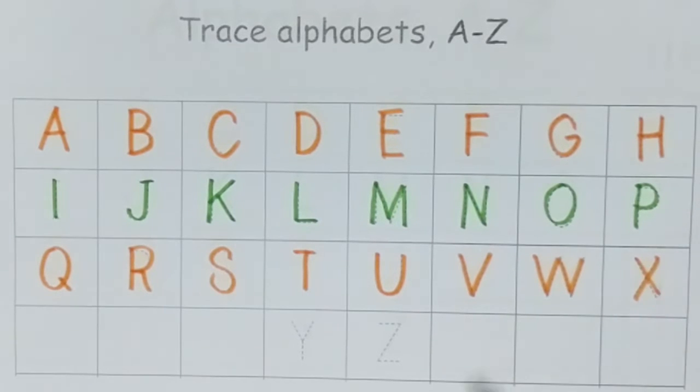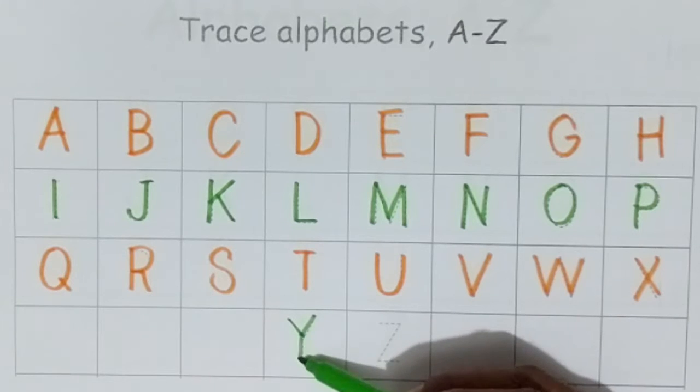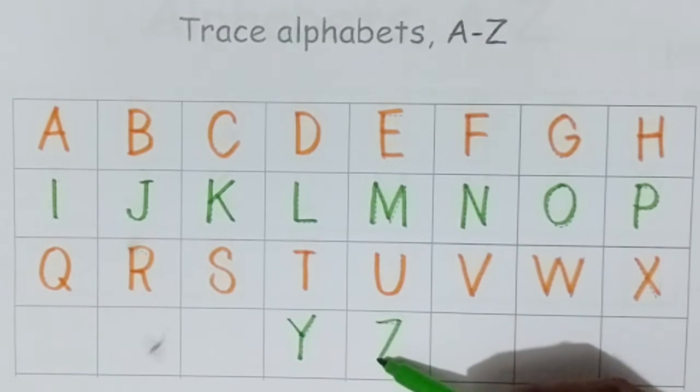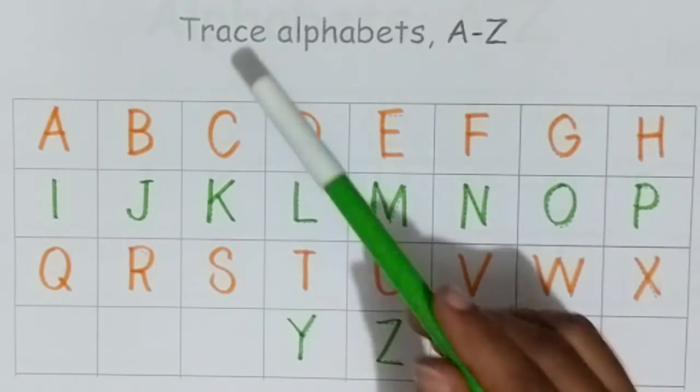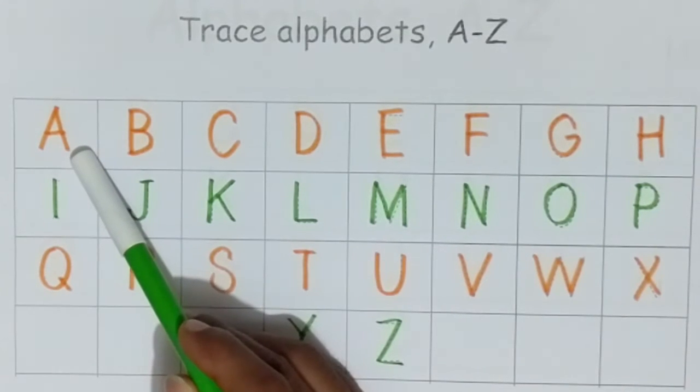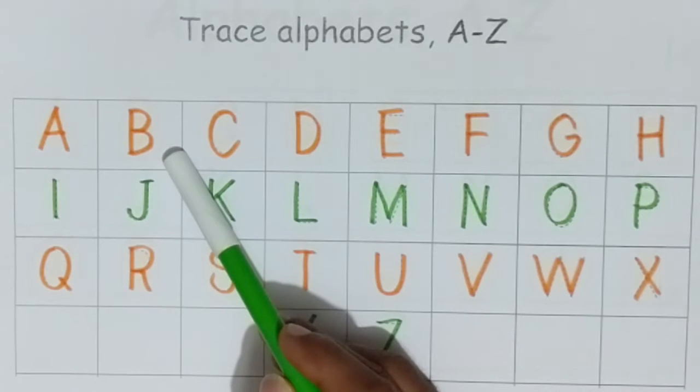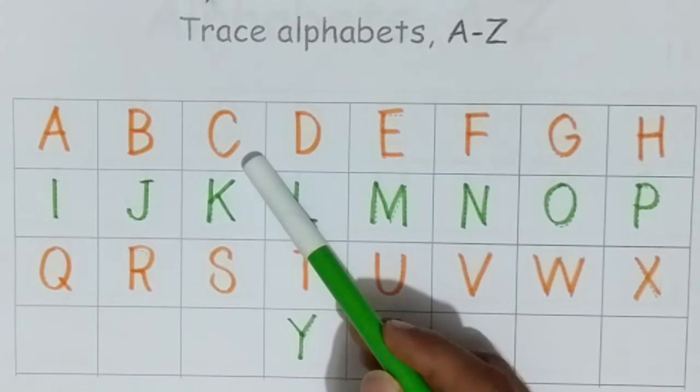X. Green color. Y, Z. Trace alphabets A to Z. A, A for apple. B, B for ball. C, C for cat.